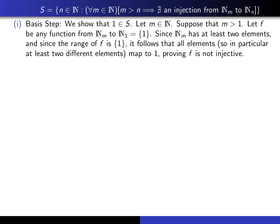Here's my proof of the basis step. We have to show that 1 is an element of S. Let m be an element of the natural numbers. Suppose m is bigger than 1. I have to deduce that it's impossible for there to be an injection from N_m into N_1. I give myself any function f from N_m to N_1 and convince you it's not an injection. Since N_m has at least two elements and the range of f must be {1}, at least two different elements must map to 1, and that proves f is not injective. That completes the proof of the basis step.